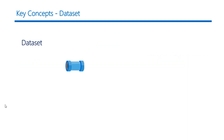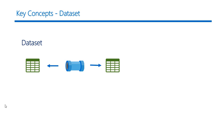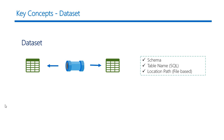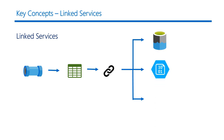Each activity can point to zero or more input data sets that represent the input for an activity in the pipeline, and they can also produce one or more output data sets that represent the output. They contain information like the schema of the data, the table name that your data set refers to, or a location path. The data sets defined in ADF require a connection string to connect to your data to fetch it for further processing.